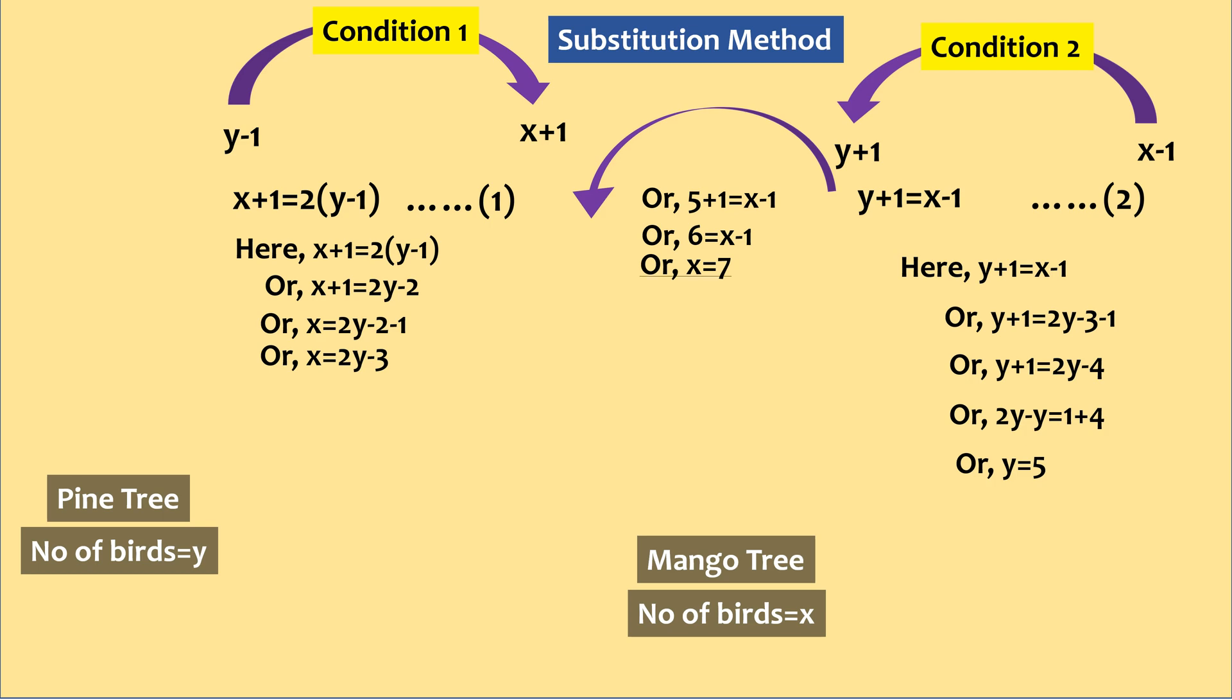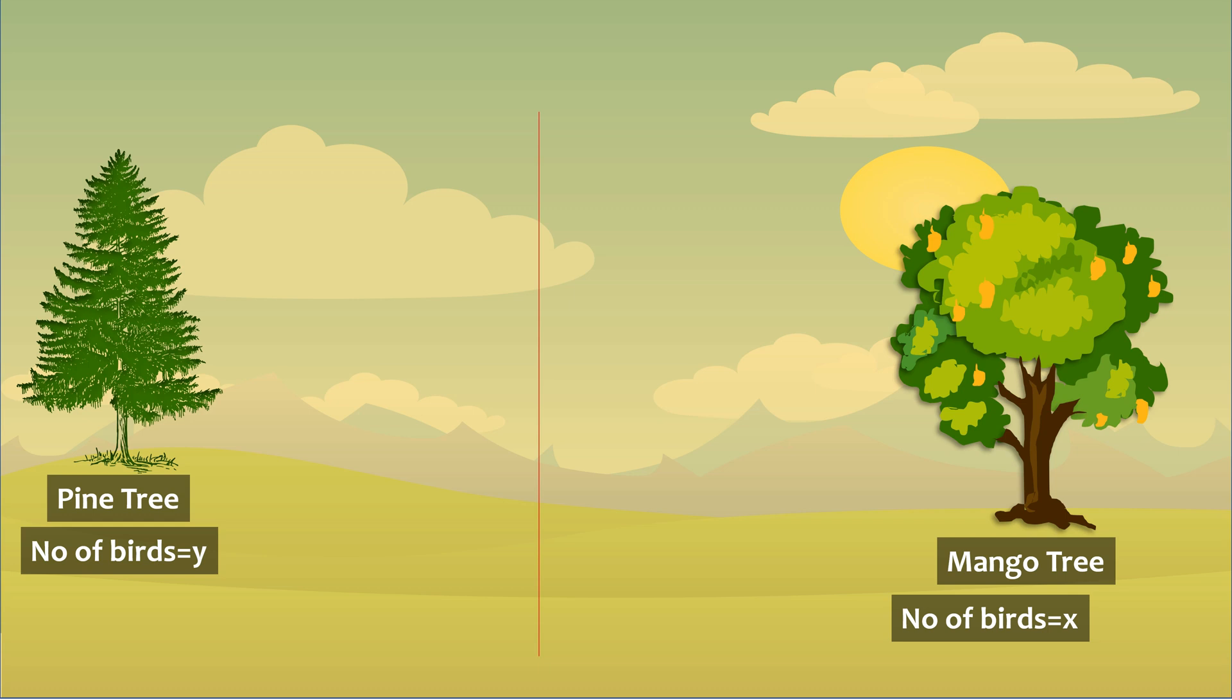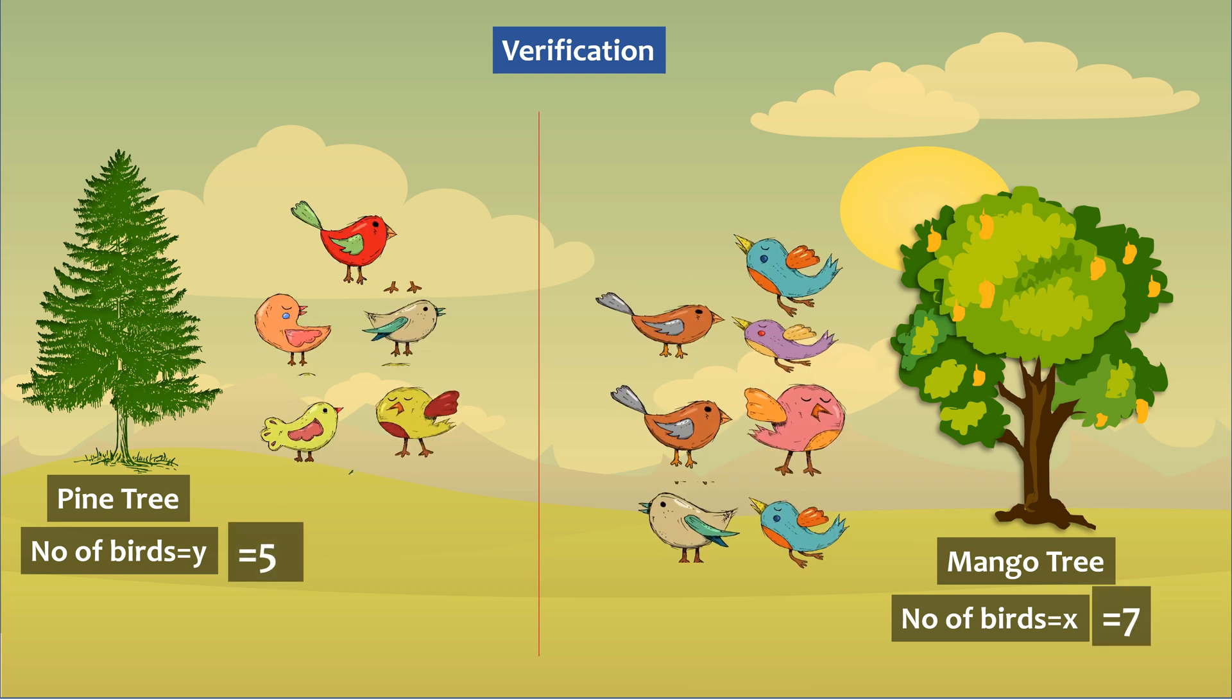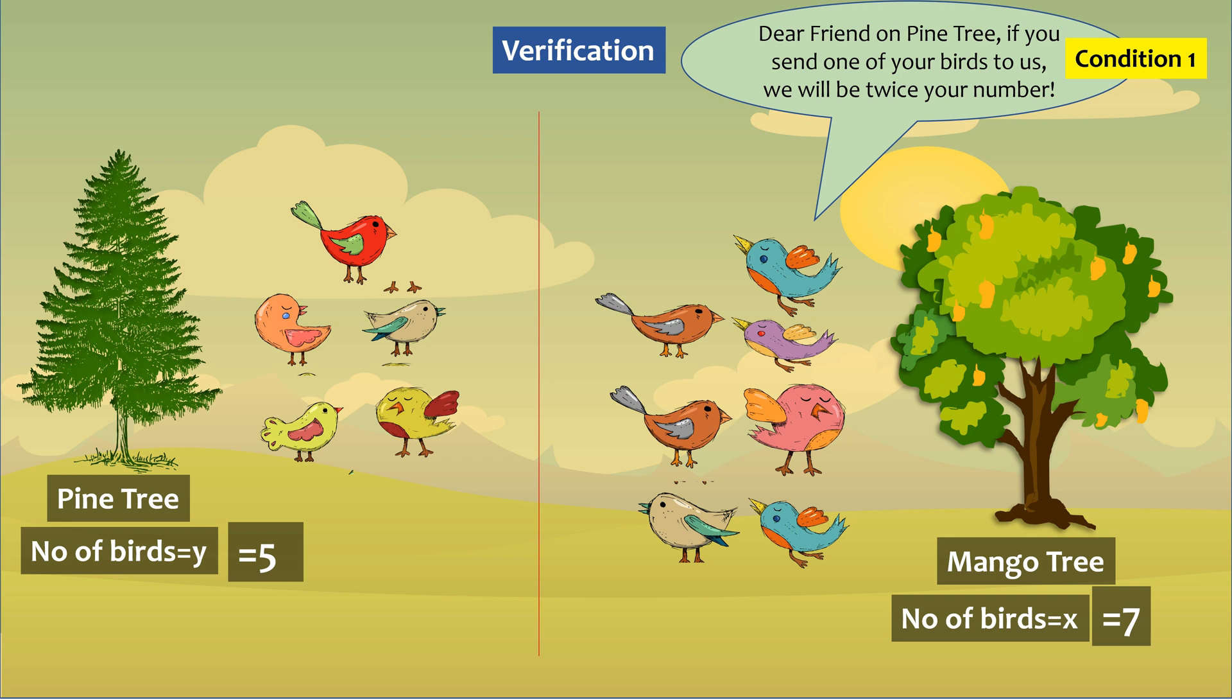And we have solved it. Let's now verify if whatever we have got is correct. So we got number of birds on pine tree to be 5 and that on mango tree to be 7. Here condition 1 is, if mango tree receives 1 bird from pine tree, the total number of birds on mango tree will be twice the number of birds on pine tree.